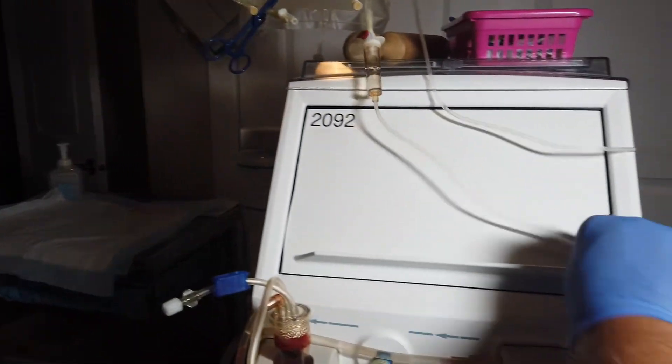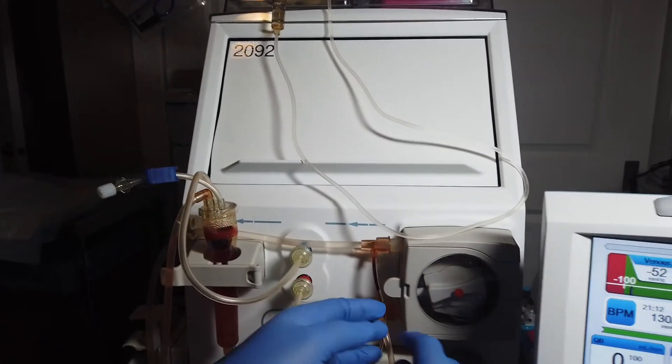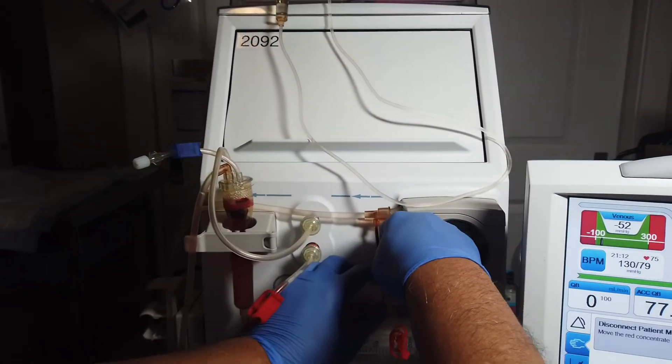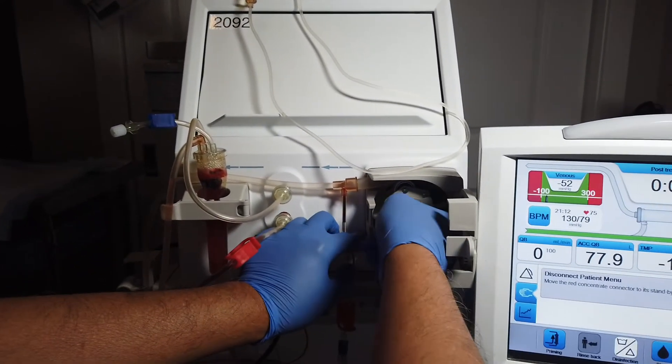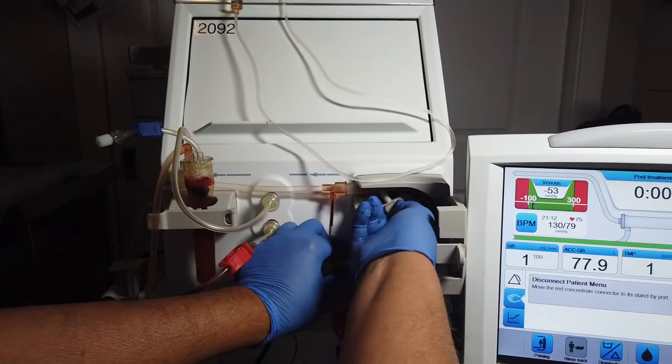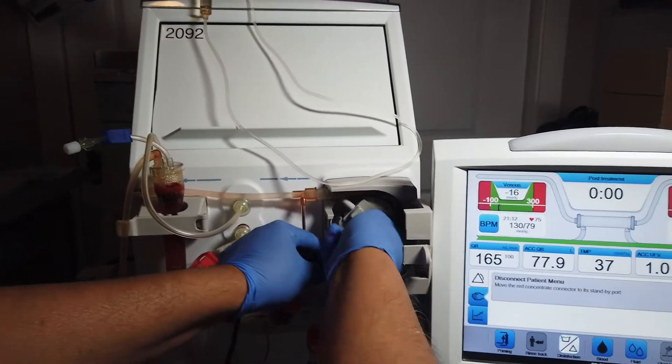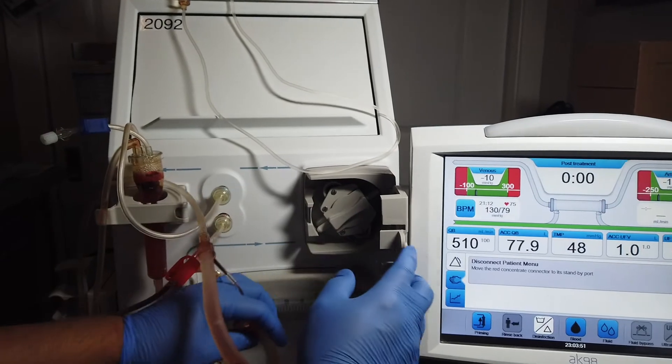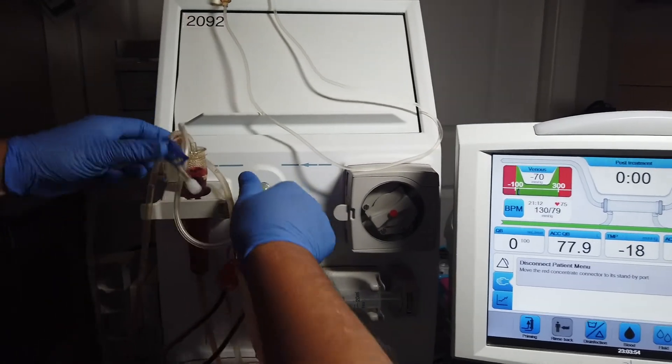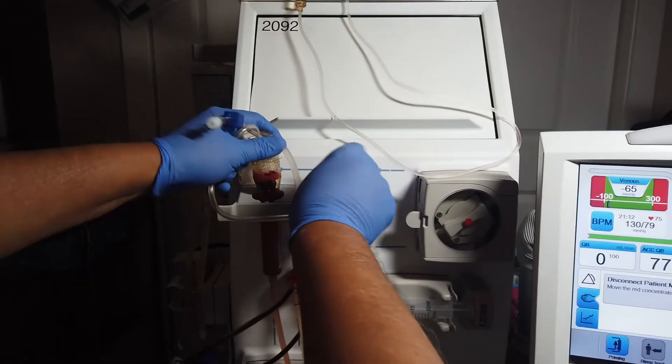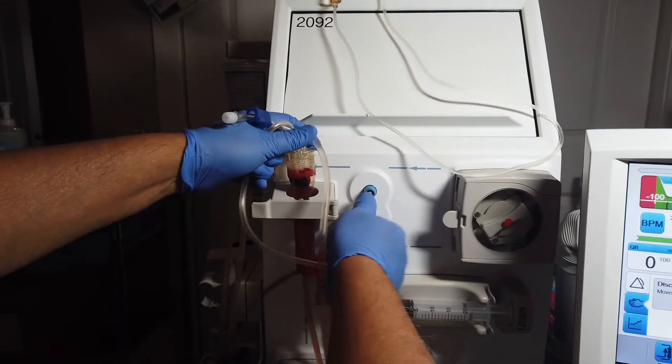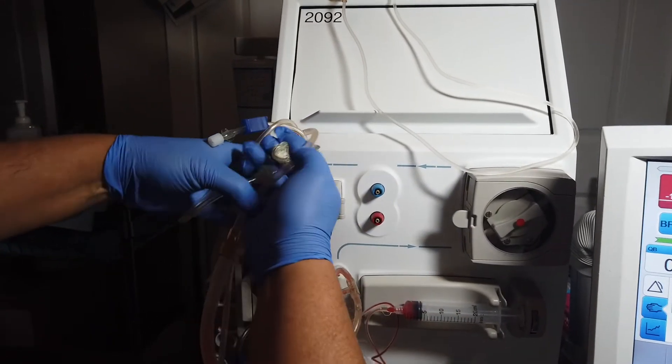After that, I go ahead and take off the line itself. I always like to start with the pump area because I don't want the pump to get caught. Release all the hatches. Unscrew the venous tube and also the arterial sensor tube.